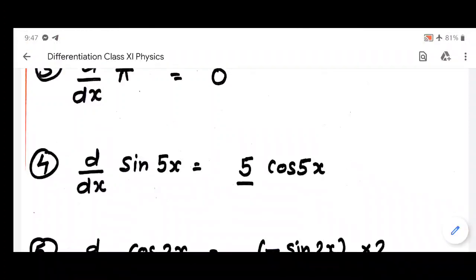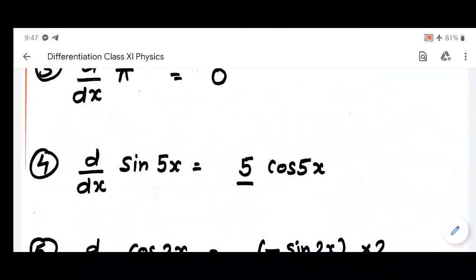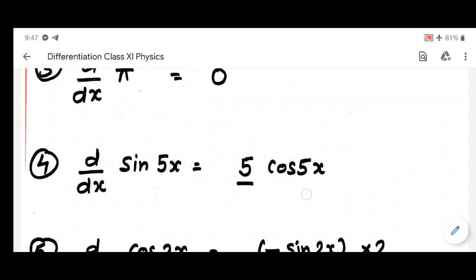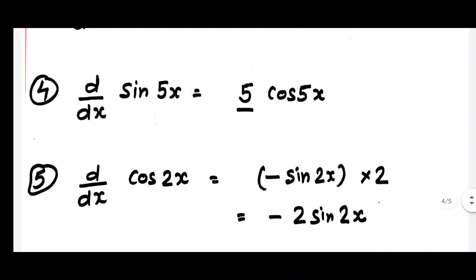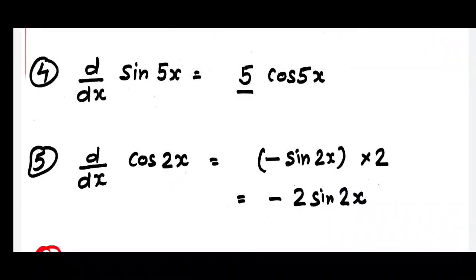For d/dx of sin 5x: after getting cos 5x, you further differentiate 5x to get 5, and multiply it in — so the answer is 5 cos 5x. This is the chain rule: differentiate the outer function first, then multiply by the derivative of the inner function. For d/dx of cos 2x: differentiating cos 2x gives minus sin 2x, then differentiating 2x gives 2, so the answer is minus 2 sin 2x.